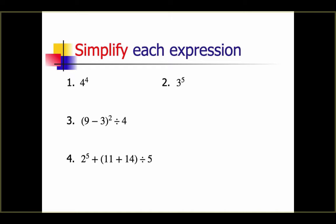Now let's simplify some expressions. The first one is 4 to the fourth power. You can do this on your calculator and you will find that 4 to the fourth power is 256. Next, number 2: 3 to the fifth power is 243.